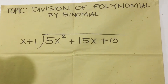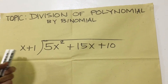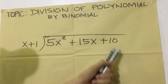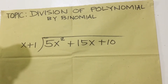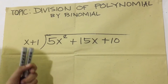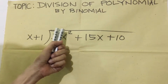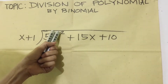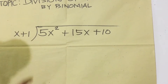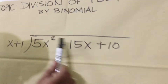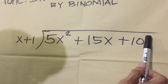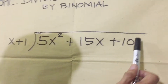In division of polynomial by binomial, the binomial divisor is called the polynomial with three terms. The terms are arranged in descending order — from the highest down to the lowest exponent, like two, one, and the exponent of the constant is zero.